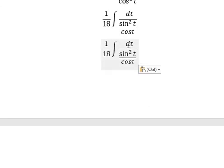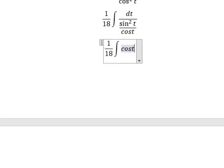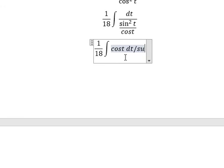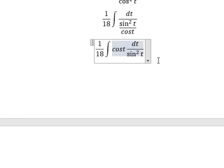We simplify cos t on numerator and denominator. This one will go to numerator. So we can use integration by substitution.